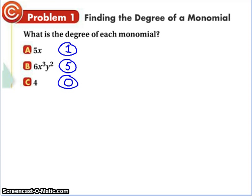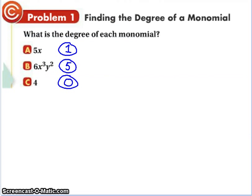So if we go back to the definition real quick. A degree of a monomial is the sum of the exponents of its variables. The degree of a non-zero constant is 0. 0 has no degree. Alright, so those are the three.